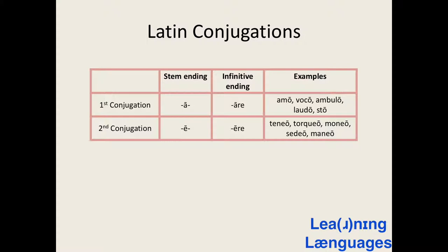For the second conjugation, the examples we have are: teneo, meaning I have or I hold; torqueo, meaning I twist, I wind, I spin, or I whirl — it can also mean I torture or I torment; moneo, meaning I warn or I advise, and it can also mean I remind; sedeo, meaning I sit; and maneo, meaning I wait for someone or something.